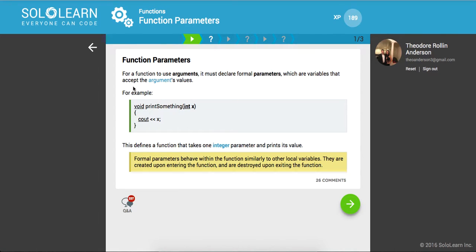So here we have void print something and you can pass along an integer and all we're gonna do is print out this integer. This defines a function that takes one integer parameter and prints its value. Formal parameters behave within the function similarly to other local variables. They're created upon entering the function and are destroyed upon exiting the function, so its scope is local to that function.